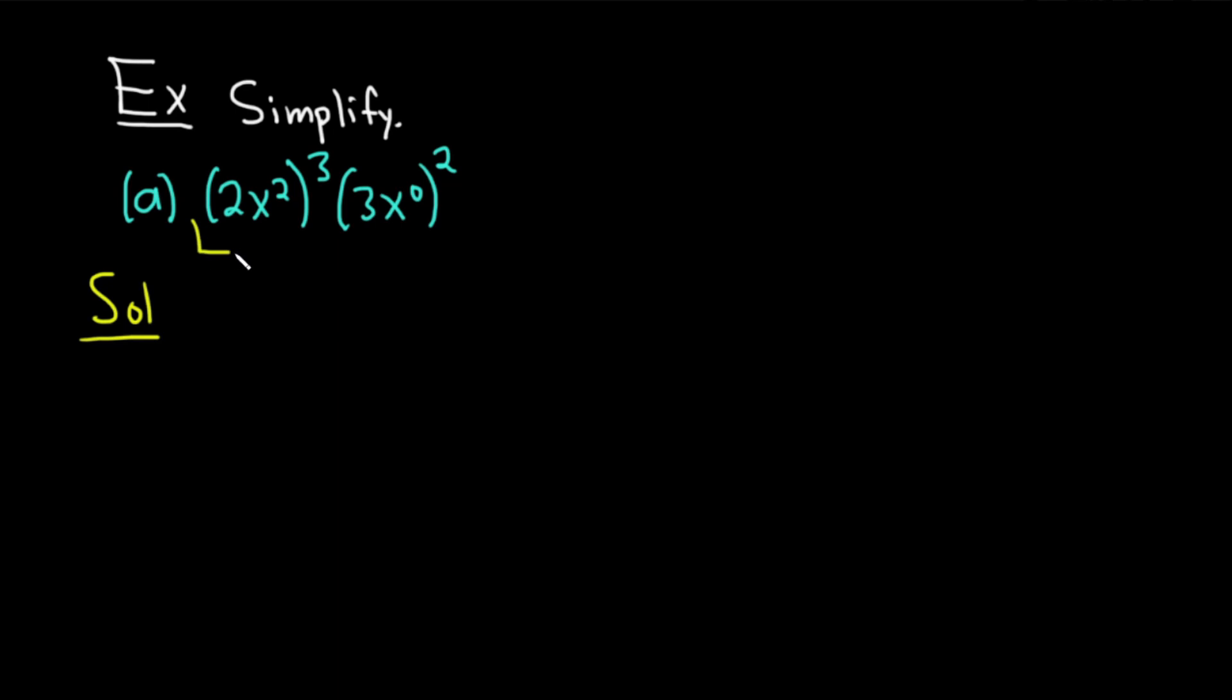So for this first factor here, 2x squared to the 3rd power, whenever you have a product like this raised to a power, you have to raise each factor to that power. So it'll be 2 cubed, and then x squared cubed. And then over here, we have 3, and then x to the 0 is 1, so I'll just write it there like that. And you can skip steps. I'm going to show you how I would do this in a second. I'm just showing extra steps.